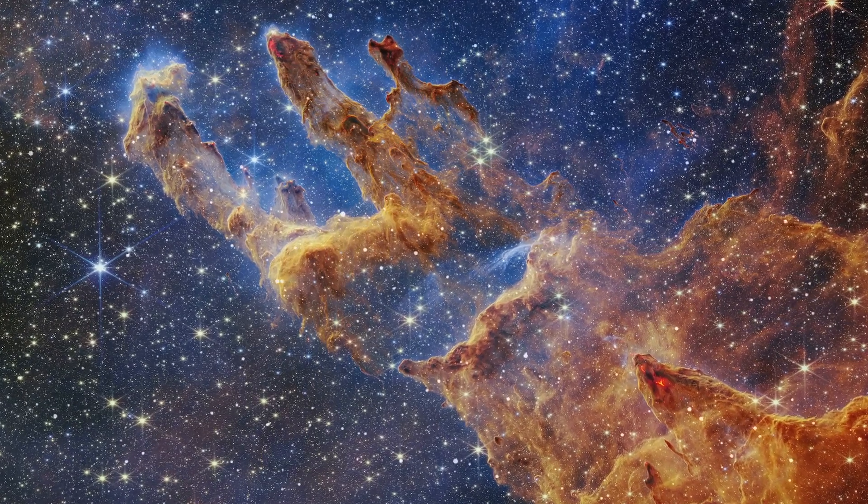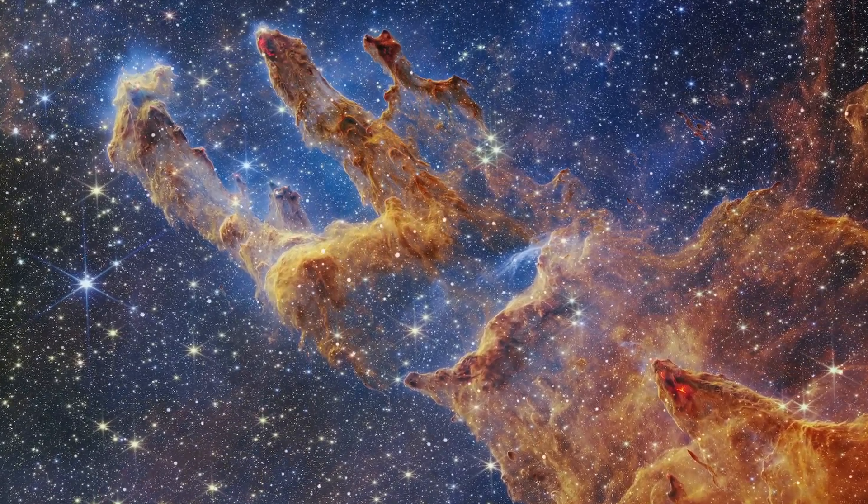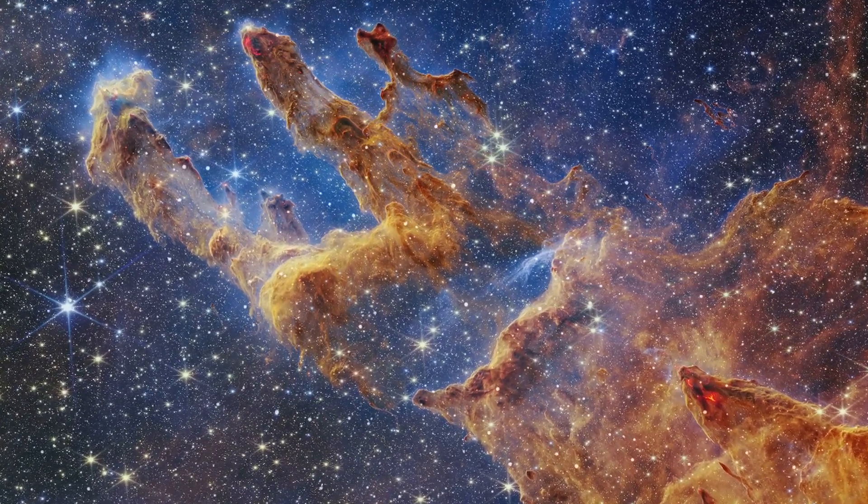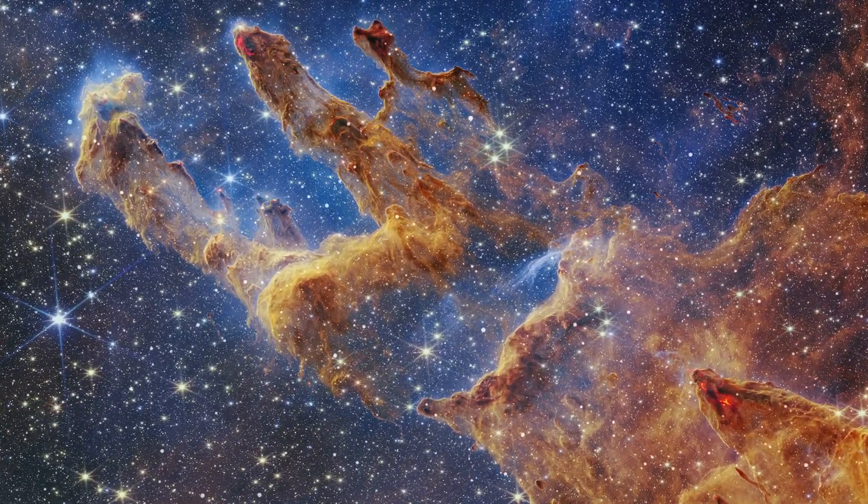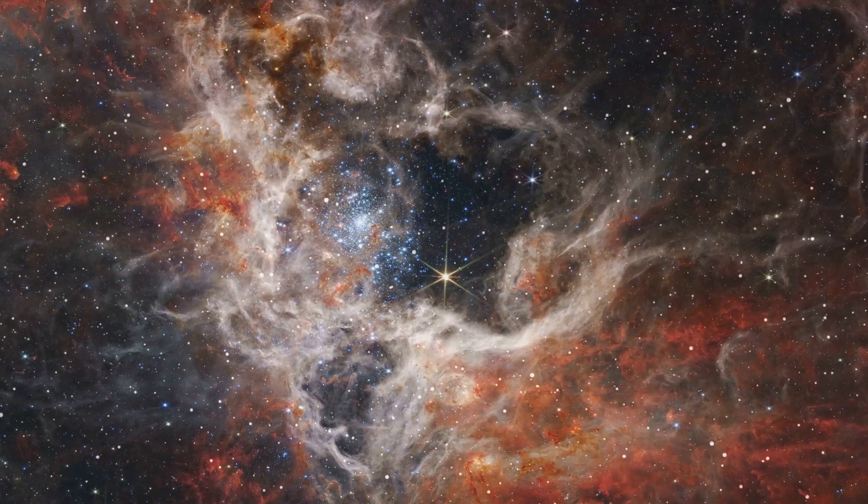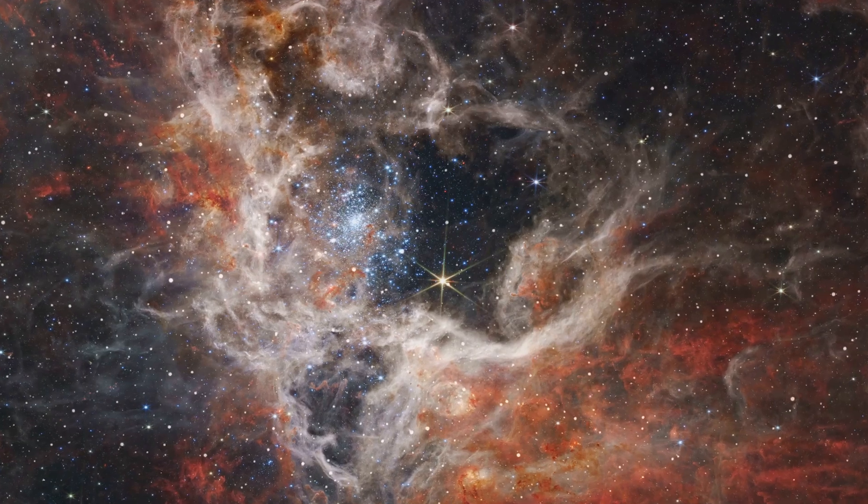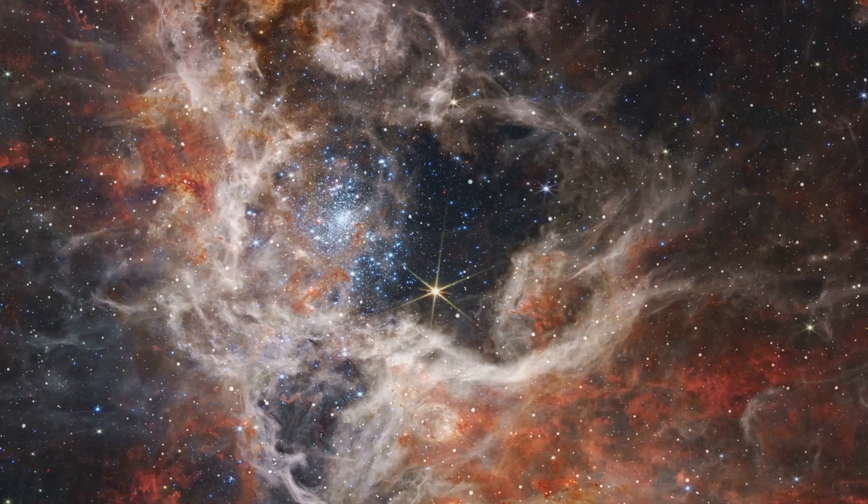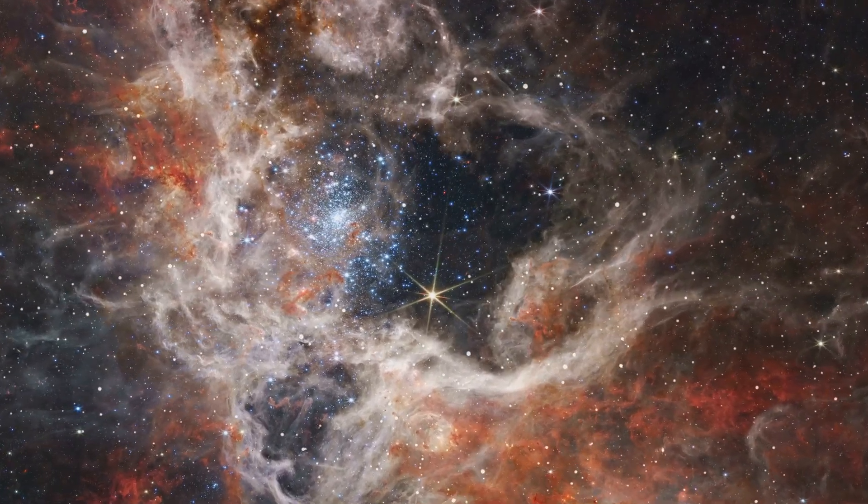Now you may wonder how does the James Webb Telescope manage to capture these unseen galaxies? The secret lies in its use of cutting-edge infrared technology. This enables the telescope to observe objects in space that are otherwise invisible to the human eye, as they radiate primarily in the infrared spectrum. The result? A breathtaking mosaic of thousands of galaxies that have existed for billions of years.